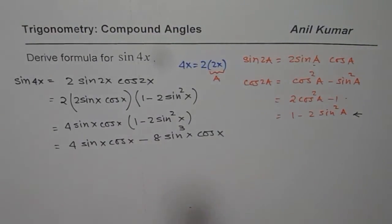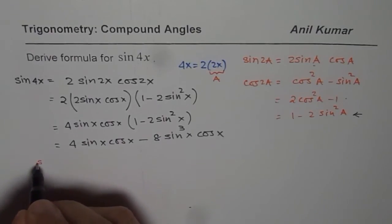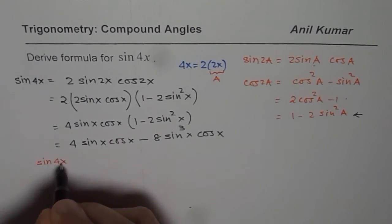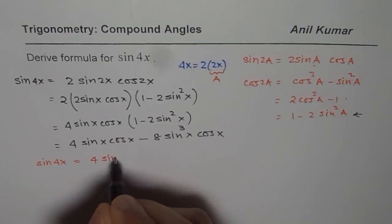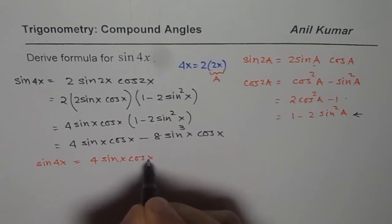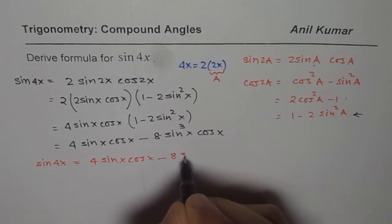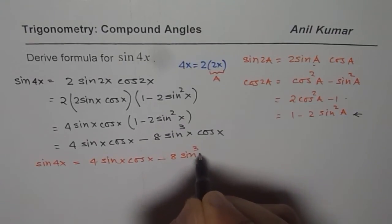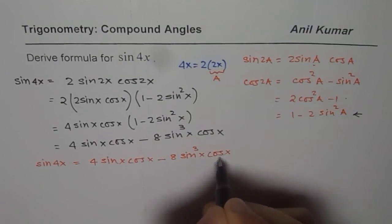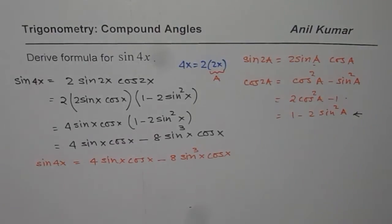That is one of the formulas for sin 4x. I am not saying this is the only one. You can write sin 4x equals 4 sin x cos x minus 8 sin³x cos x. That becomes one of the formulas.